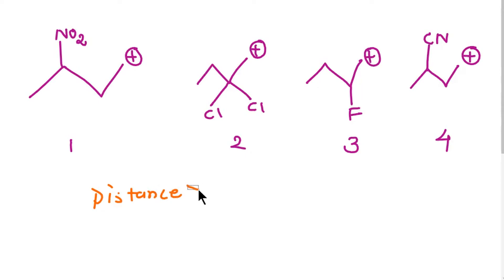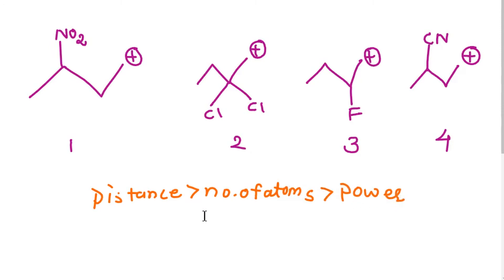First, check the distance, then check the number of atoms. If the number of atoms is the same, then check the power. Distance has higher priority than number of atoms, and number of atoms has higher priority than power. The group at the lower distance from the carbocation will withdraw electrons more and make the carbocation more unstable.